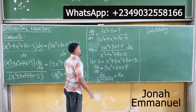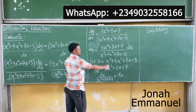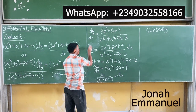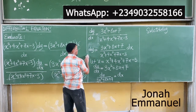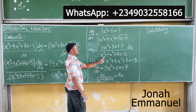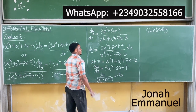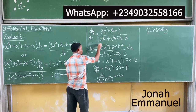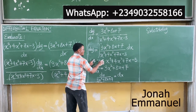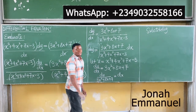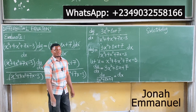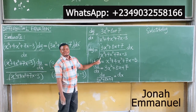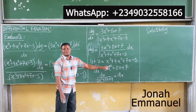Before we even do the substitution, we need to integrate both sides. So after this step, you say integrate both sides — you integrate this side, you integrate this side. You have to put the integral sign first before you start doing the substitution.